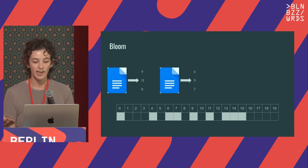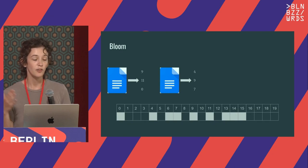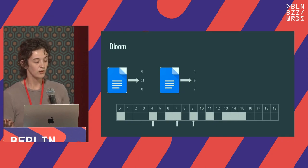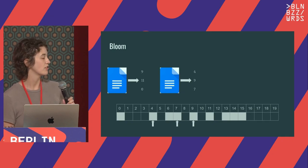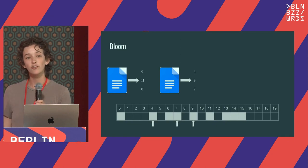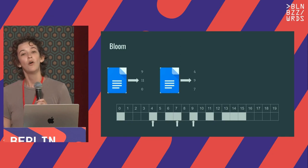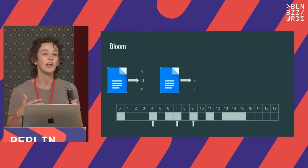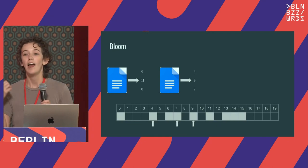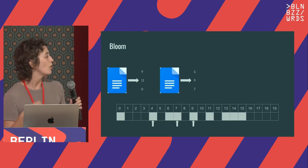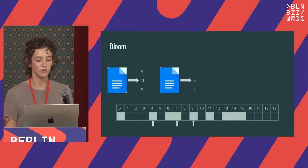Then we look at a document that has not been added to our bloom filter, but those three hash values — 4, 9, and 7 — are already set. So there's no way to say whether or not this document has actually been added to the bloom filter, or if it just probably has. That's why you get into the math of how many hash functions do I need, how long does my bloom filter need to be, and what accuracy can I get.